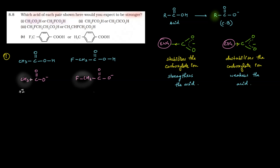For the second structure, CH₂F contains fluorine, which has the -I effect — it pulls electrons toward itself. Groups that pull electron density stabilize the carboxylate ion and strengthen the acid. Therefore, the stronger acid here is CH₂FCOOH — the fluorine-containing acid. Clear? Now let's move to the next part.